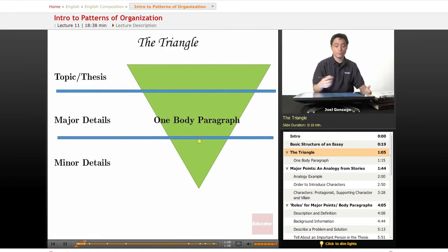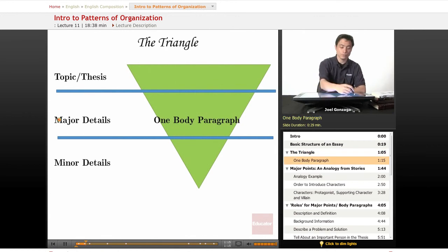We already know what the topic and the thesis are, and we also know what major details are, but what does that correspond to in an essay? Well, normally, if you've got a major detail, it's normally exactly one per each body paragraph. So if you have three major details from your topic, you know that you're going to write exactly three paragraphs, which fits in perfectly with the five-paragraph essay format.